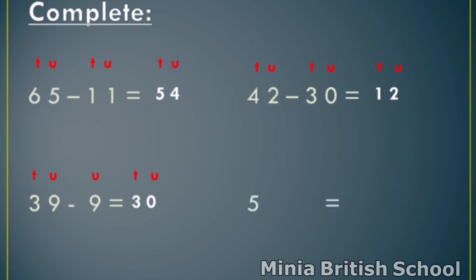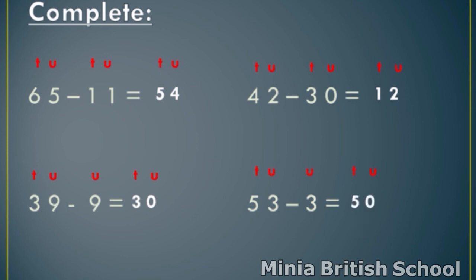And the last example: fifty-three minus three. Write T and U above fifty-three. Number three consists of one digit, so this number is units. Write U above three. Write T and U above the answer space. Start from units. Three minus three — any number minus the same number equals zero. So, write zero under units. And in tens, I have only number five. Five minus nothing equals five, the same number. So, the answer is fifty.